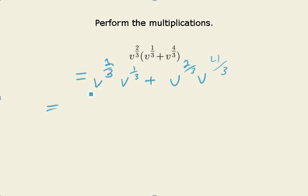Well, I have the same base here, v and v, so I can just add my exponents. v to the two-thirds plus one-third is three-thirds.